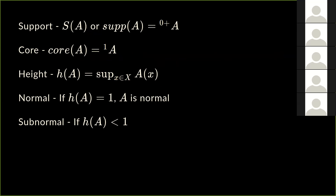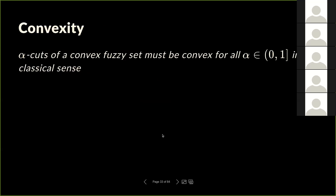Some more terminology: the support of A is all elements from the universe with a positive membership grade — everything with grade zero definitely isn't in A. The core of A is every element that completely belongs to A, with membership grade one. The height of a fuzzy set A is the maximum membership grade given to any element. A fuzzy set is called normal if its maximum membership grade is one, and sub-normal if the maximum is less than one.